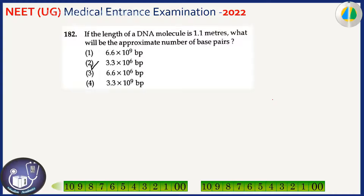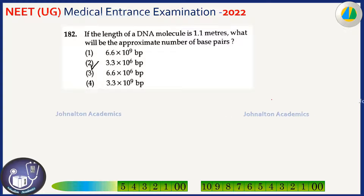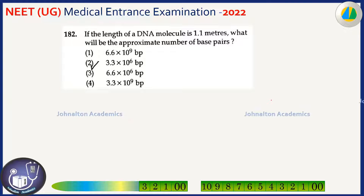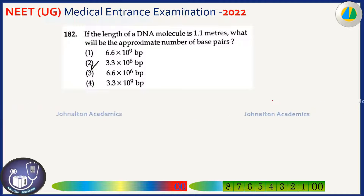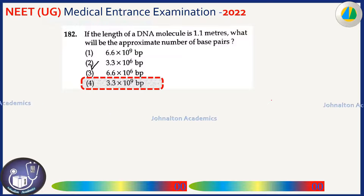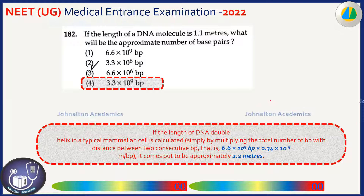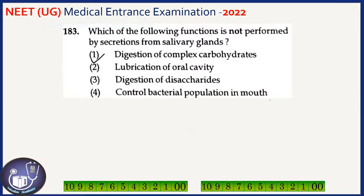If the length of a DNA molecule is 1.1 meters, what will be the approximate number of base pairs? This is the human genome — 1.1 meter corresponds to 3.3 billion, that is 3.3 × 10⁹ base pairs. The diploid is 2.2 meters which gives 6.6 × 10⁹. So the correct answer here is option four. You can read the explanation by pausing the video.